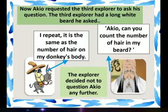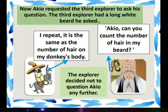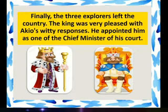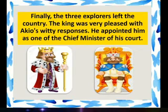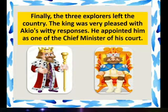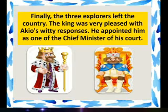This time, the third explorer decided not to ask Akio any further questions, because he understood that Akio is a very clever person. Then afterwards, all three explorers got their answers and finally left the country. The king, who was present in the court, listened to all of Akio's clever answers and was very pleased and glad with his witty responses. He then appointed Akio as one of the chief ministers of his court, meaning Akio became the head of all the ministers.